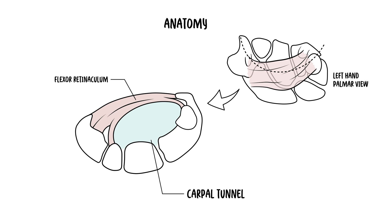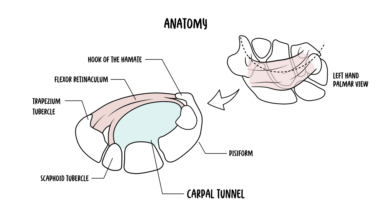The carpal arch is defined by specific bones: laterally by the scaphoid and trapezium tubercles, and medially by the hook of the hamate and the pisiform. The flexor retinaculum serves as the tunnel's roof and it spans between the hook of the hamate and the pisiform medially to the scaphoid and trapezium laterally, effectively converting the carpal arch into the carpal tunnel.